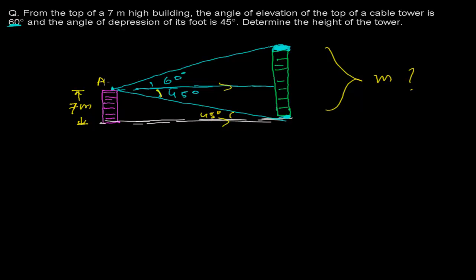Let me give them names. My first right angle triangle is triangle ABC and my second right angle triangle is triangle ADE. Now in both of these right angle triangles, the next step is to find what is common. In every type of this kind of problem, this is our approach: draw the picture, name the right angle triangles, and then see what the common elements are.